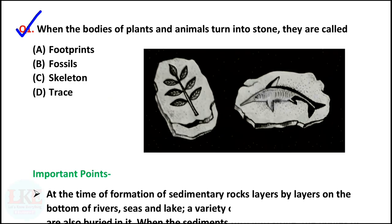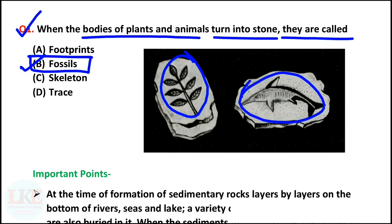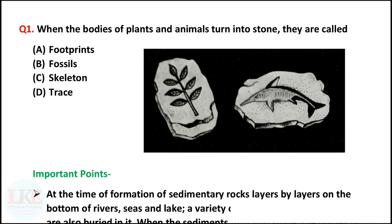First question: when the bodies of plants and animals turn into stone, they are called fossils. In a single word, when organisms turn into stone, they are called fossils. In this image you can see how a tree and the body of a fish turn into stone and their imprints are seen on the rock. Both are examples of fossils.